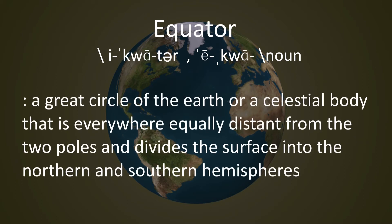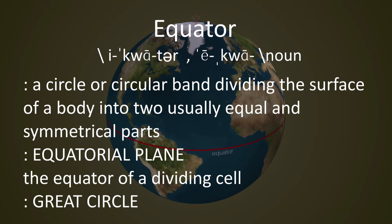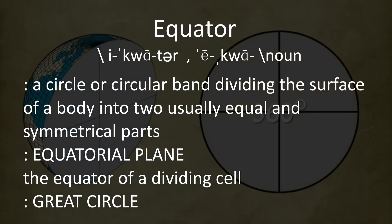A great circle of the Earth or a celestial body that is everywhere equally distant from the two poles and divides the surface into the northern and southern hemispheres. A circle or circular band dividing the surface of a body into two usually equal and symmetrical parts.